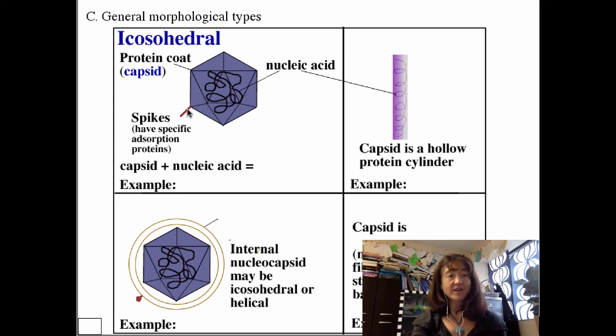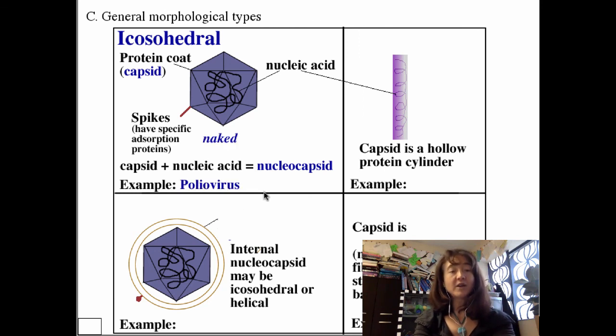Many viruses also have on their surface multiple spikes. These spikes are what adsorb to the surface of a host cell. They have on them the proteins that recognize the receptors on a host cell. Together we could say that the capsid and the nucleic acids that it contains is called the nucleocapsid. An example of an icosahedrovirus is poliovirus. The other thing that fits into the same family as poliovirus is the rhinovirus, which is the regular old cold. Both of those are naked, meaning they don't have an outer membrane surrounding the nucleocapsid.